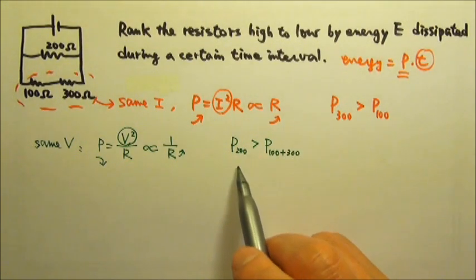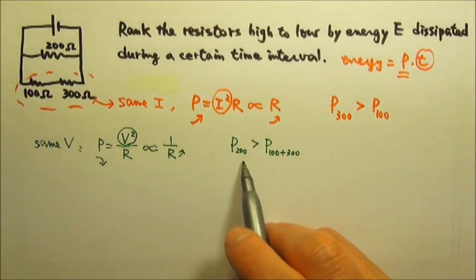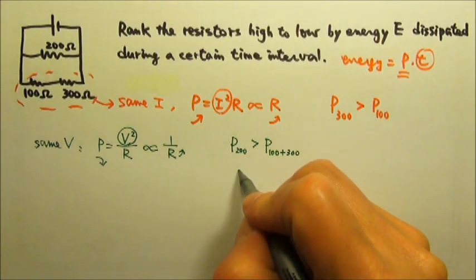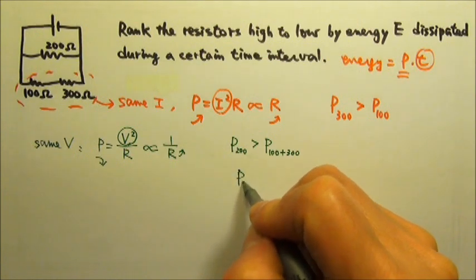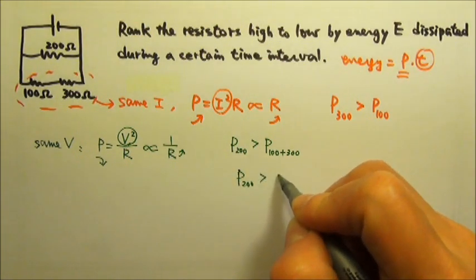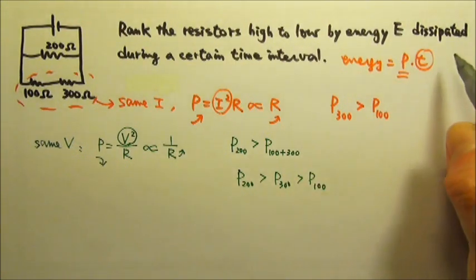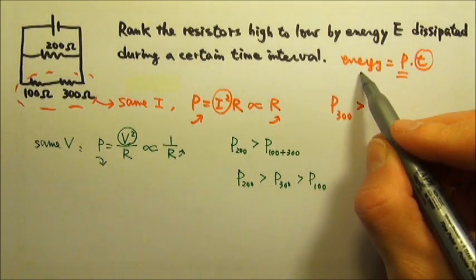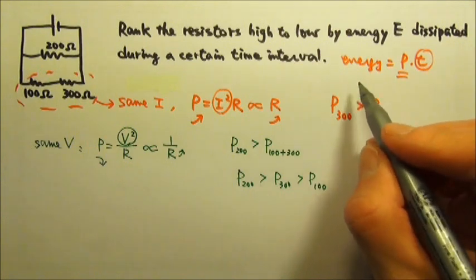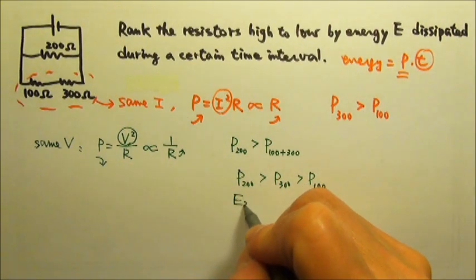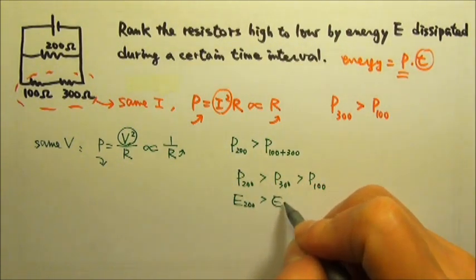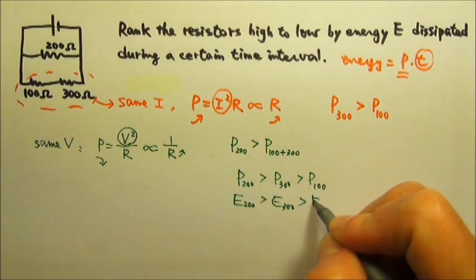That means this one definitely consumes the most power. So the answer is the power consumed by 200 is more than 300, more than 100. And since the power is proportional to the energy when the time is the same, that means E 200 is more than this and that.